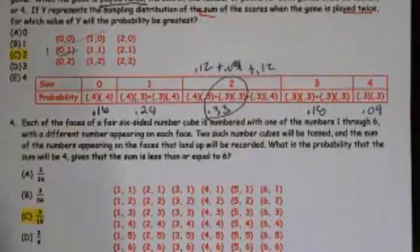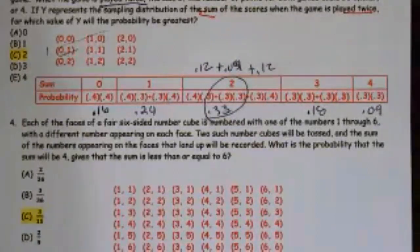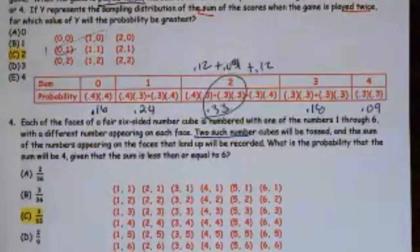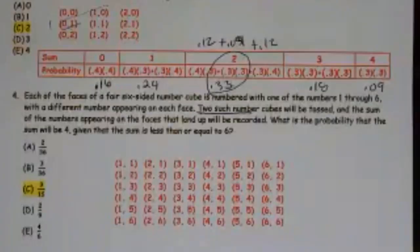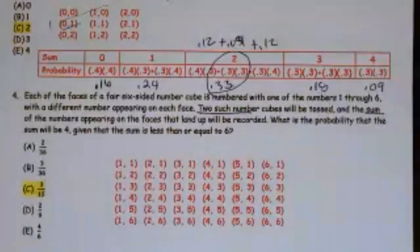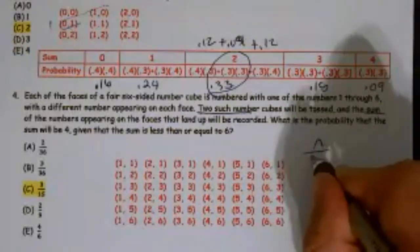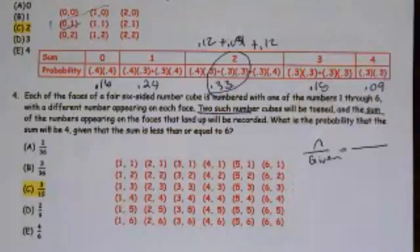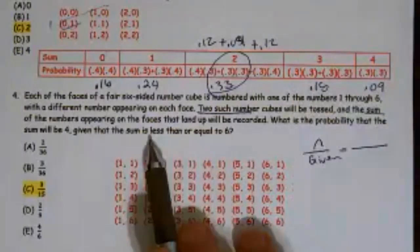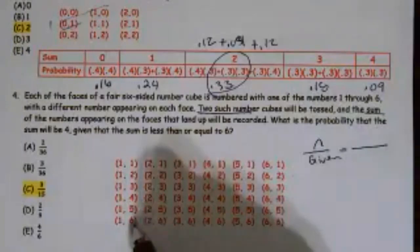Each of the faces of a fair six-sided number cube is numbered with one of the numbers one through six, with a different number appearing on each face. Two number cubes will be tossed, and the sum of the results will be recorded. As soon as I see 2, I'm doing a sample space. And they're looking for the sum. What is the probability the sum will be 4, given that the sum is less than or equal to 6? Basically we're looking for an intersection over given.